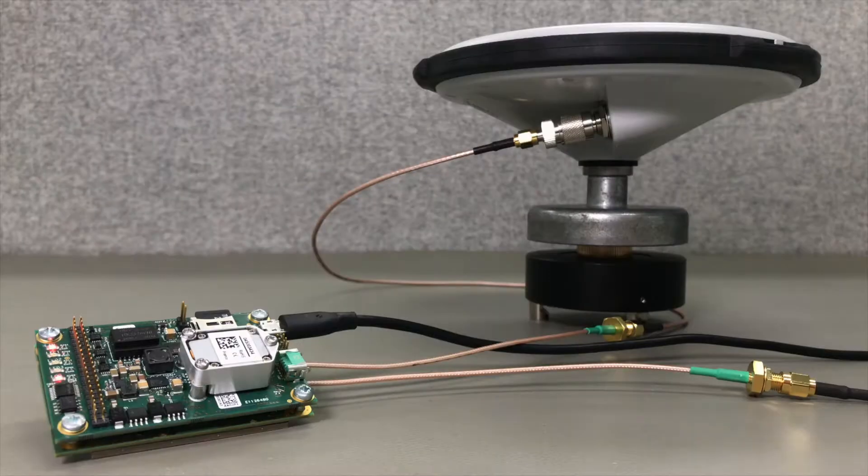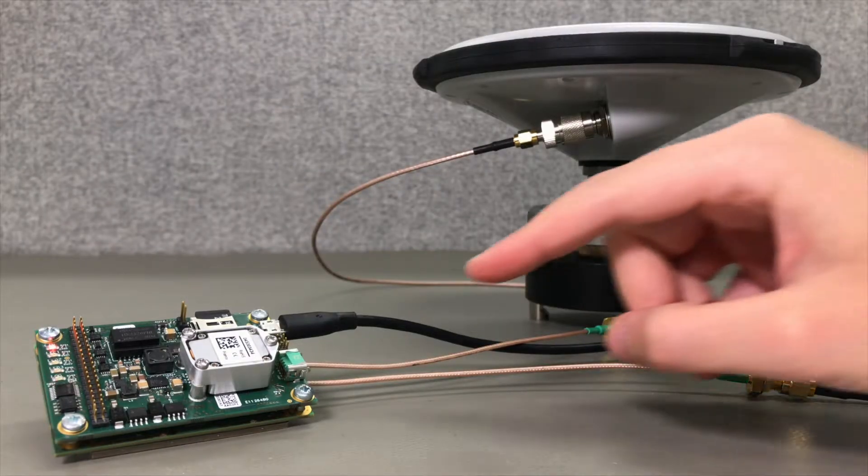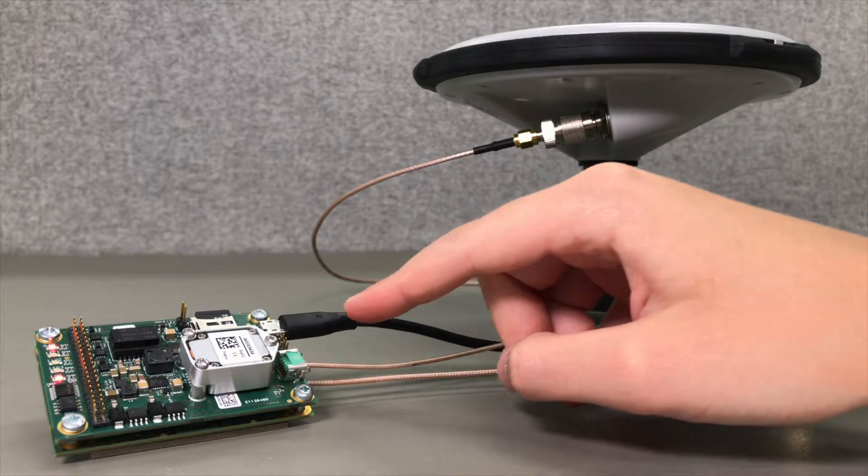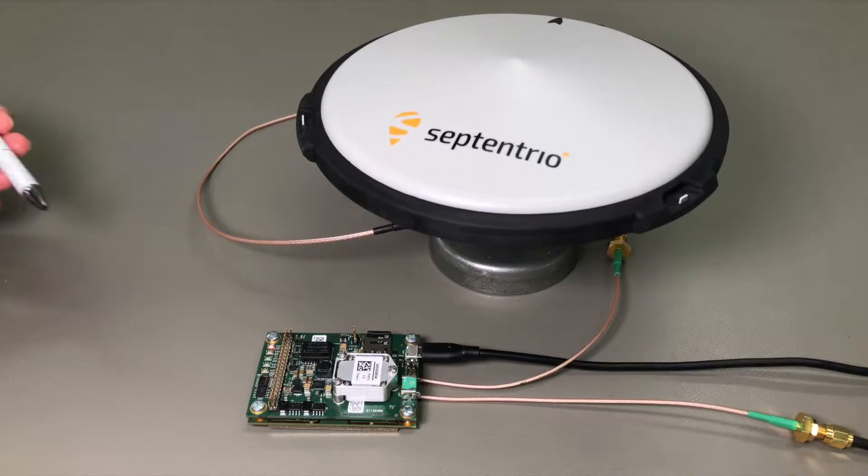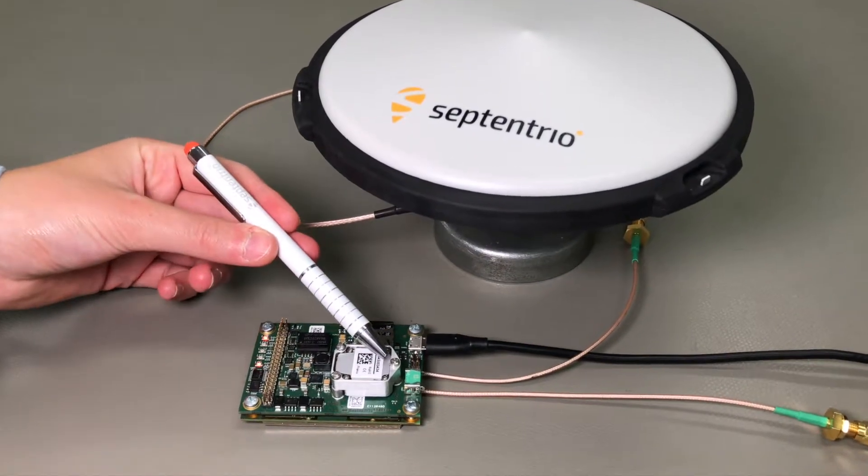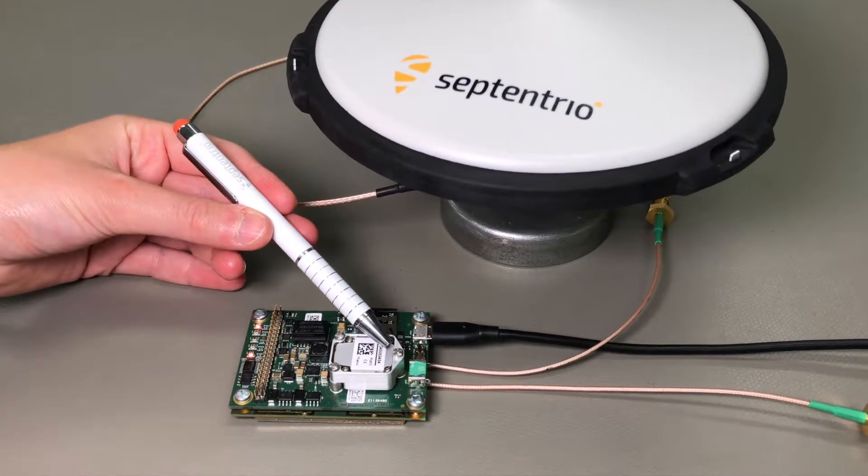In this example I'm showing you the lever arm from the IMU of an asterisk IS to the ARP. The IMU reference point is defined in a hardware manual of your Septentrio GNSS INS receiver.